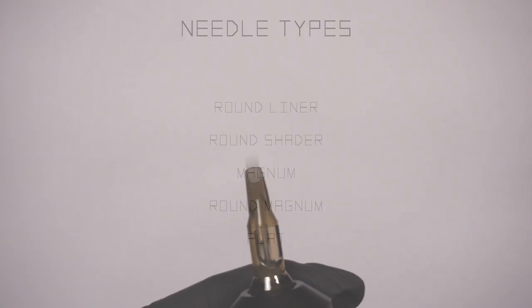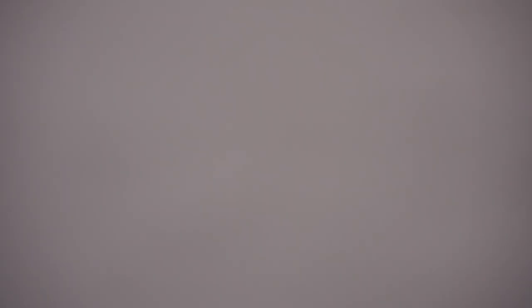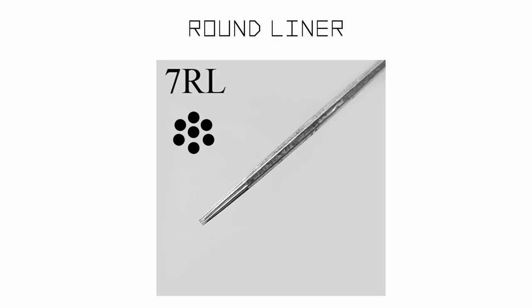There are five main types of needles that artists commonly use. When we talk about needle types, we're referring to the needle grouping. First on the list is the round liner, abbreviated RL. As the name suggests, this needle is ideal for crisp lines and hard edges. The needle grouping has tips facing slightly inward in order to form a sharp tip, similar to the shape of a pencil tip.